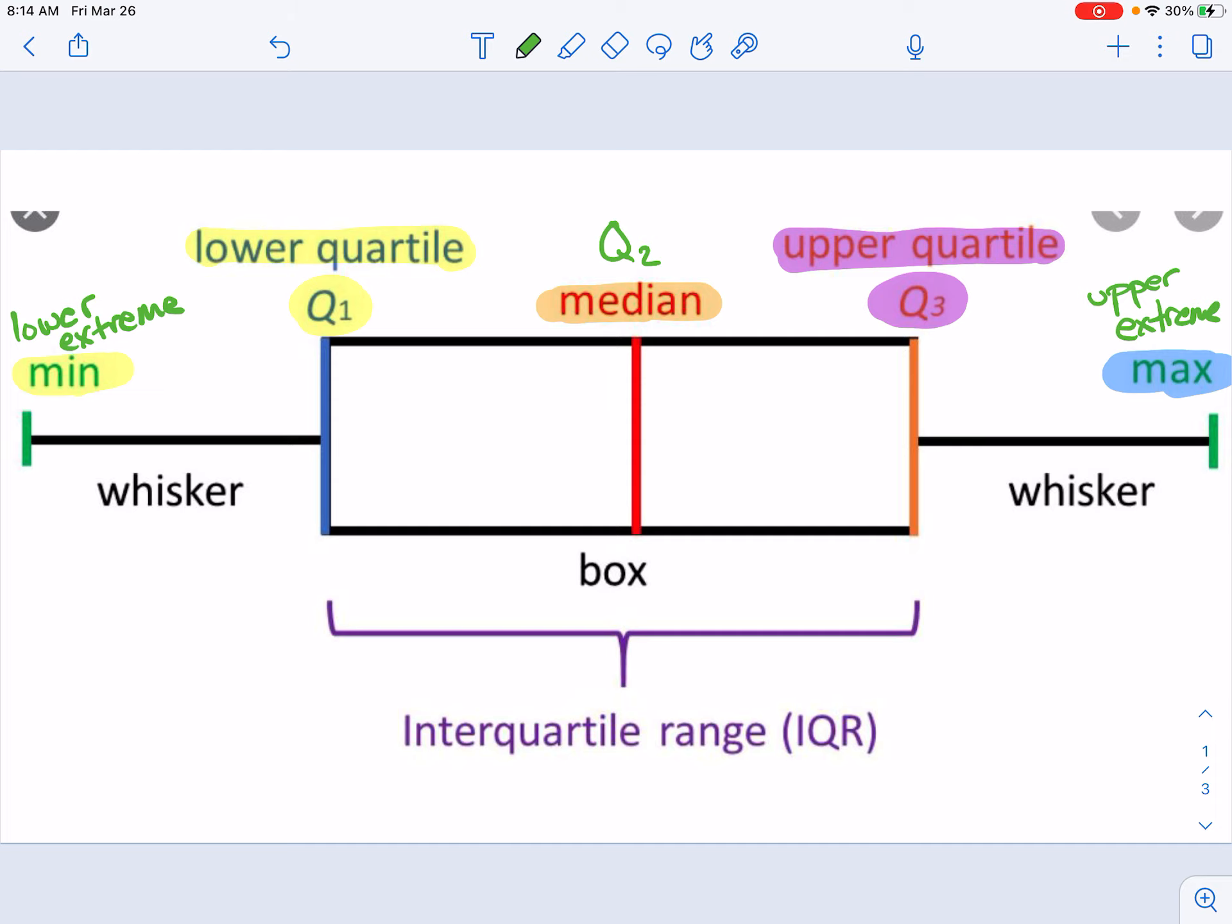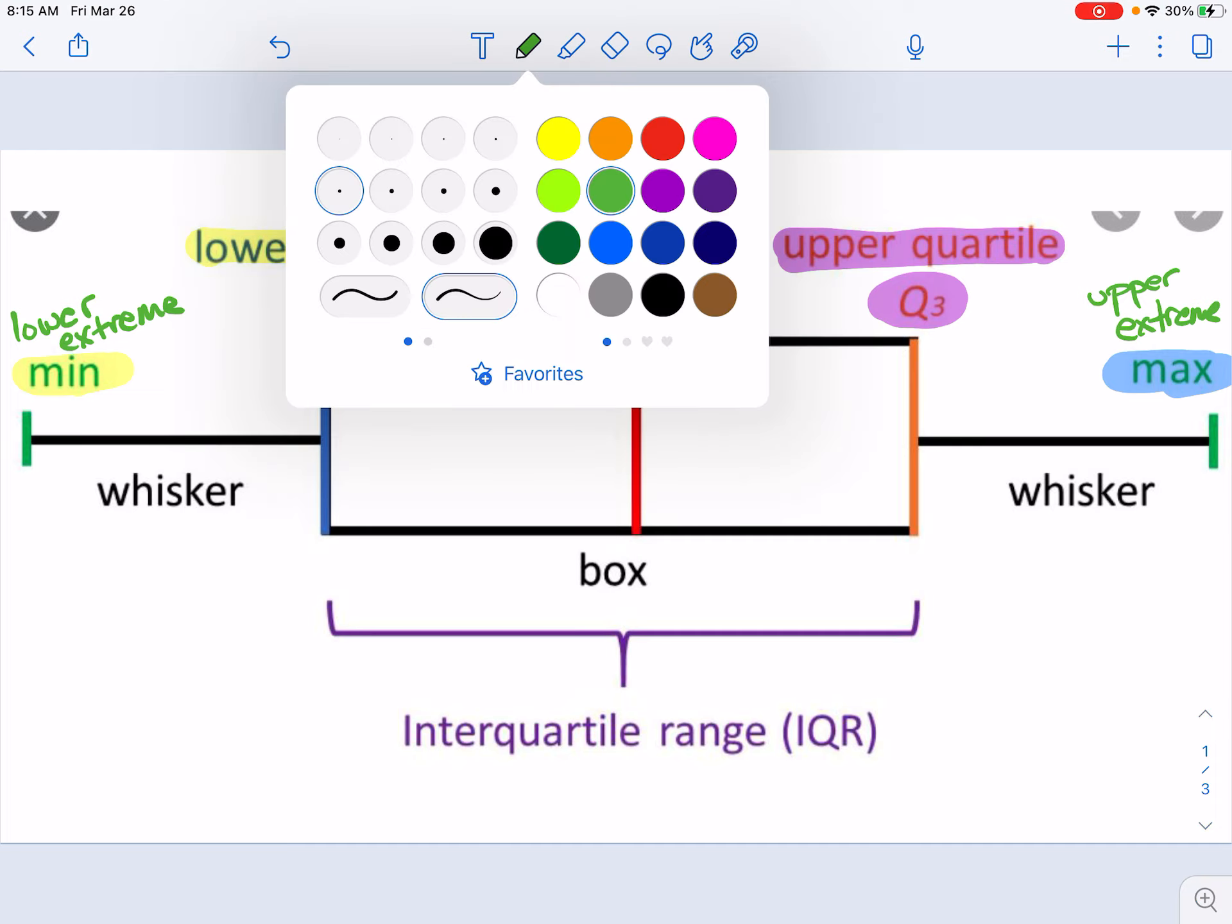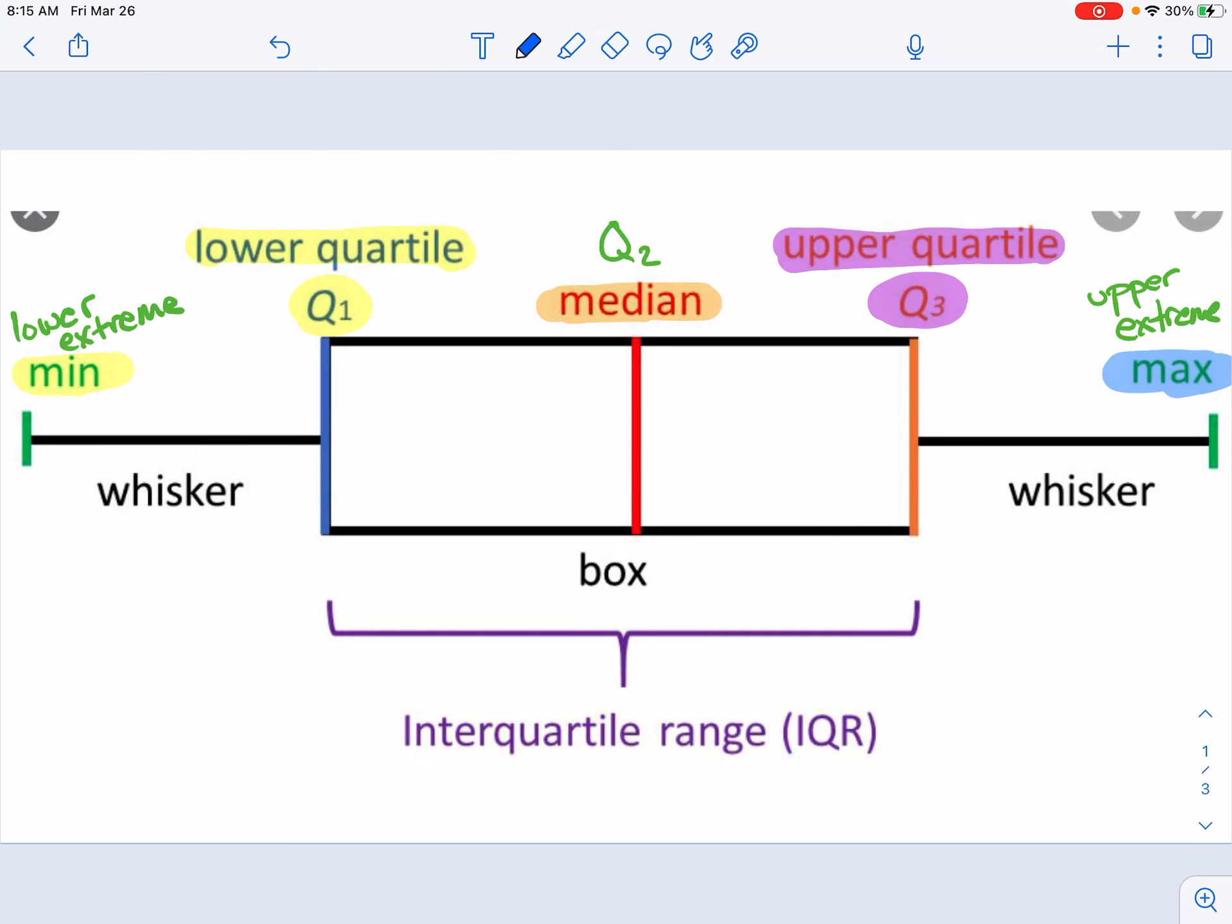Remember, since it's split up into quarters, all of our data is split up into sets of 25%. From the lower extreme to quartile 1, that's the first 25% of our data. From quartile 1 to quartile 2, or the median, is the second 25%. Quartile 2 to quartile 3 is the third 25%. And then from quartile 3 to the maximum is our last 25%, and we see that it equals 100% of our data.